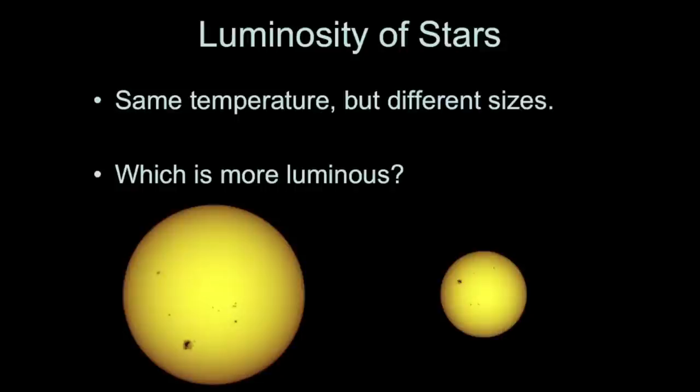Let's talk about stars. Let's do a few examples where we compare the luminosities of stars. Here, I've got two stars that are the same temperature, but they're different sizes. In this case, temperature is the same, but one is bigger than the other. The one that's larger is going to have a bigger luminosity.